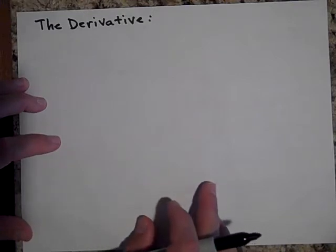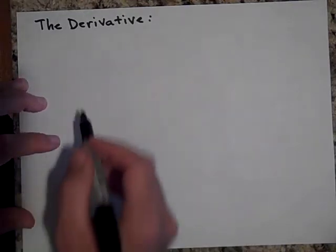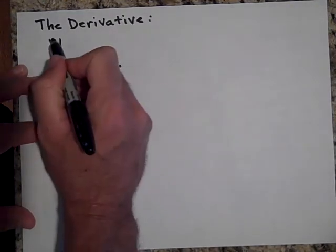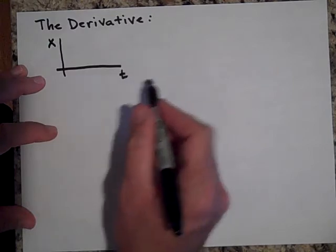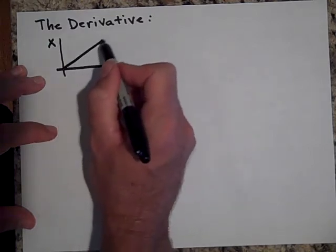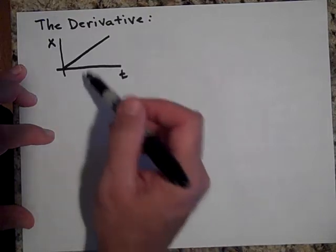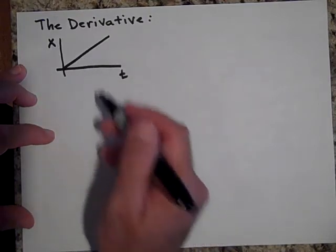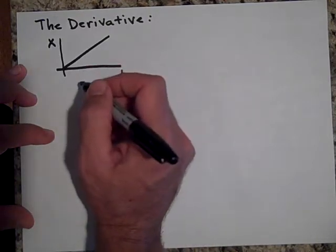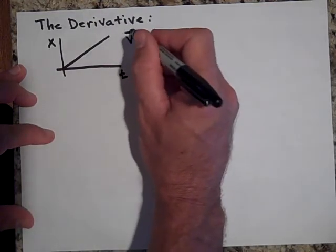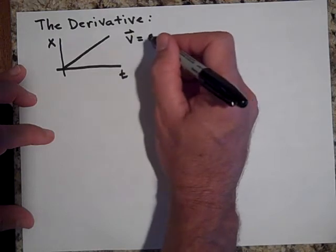Okay, so the derivative, to explain it, I'm first going to take a look at a position versus time graph. So if we have an object that its position versus time graph is given by, say, maybe this graph. Well, it turns out that the slope of this graph is going to be equal to the velocity. So the velocity is equal to the slope of this graph.